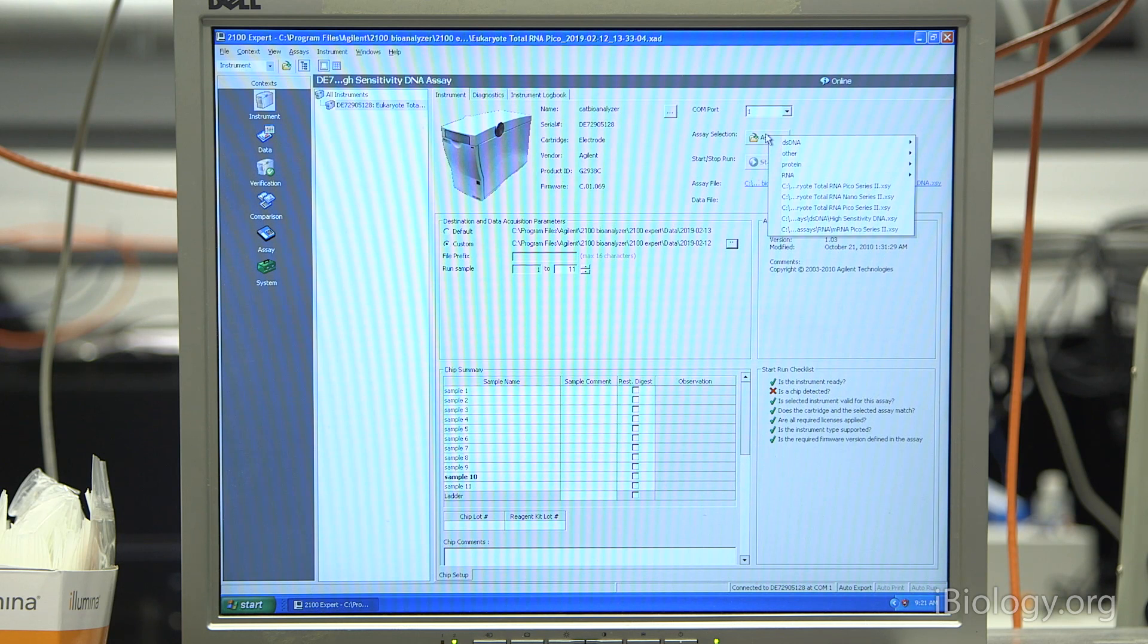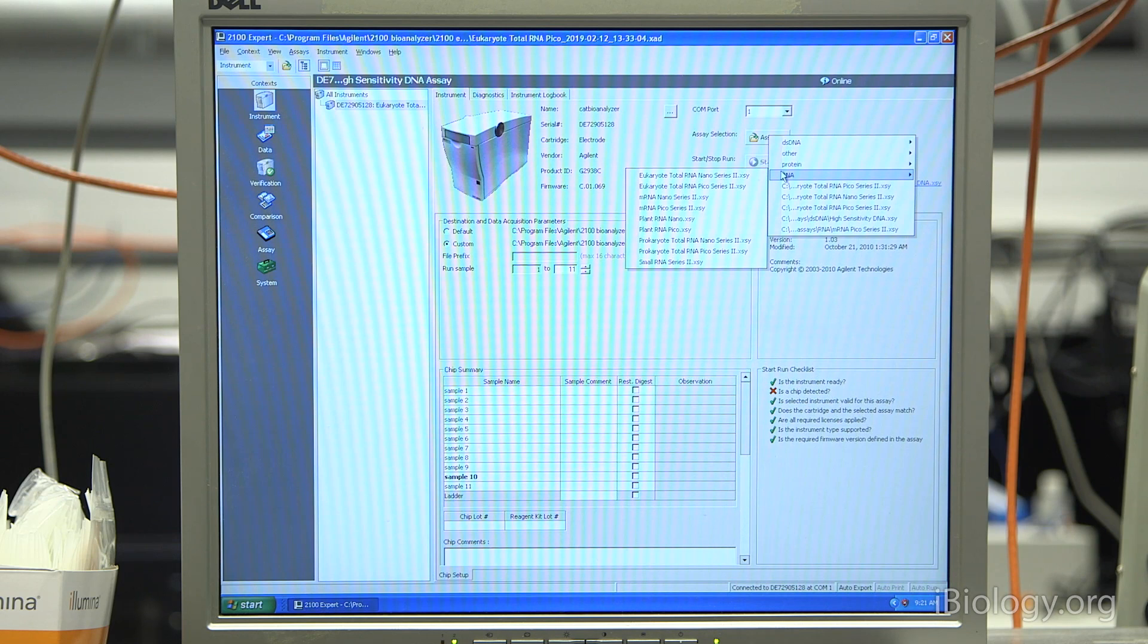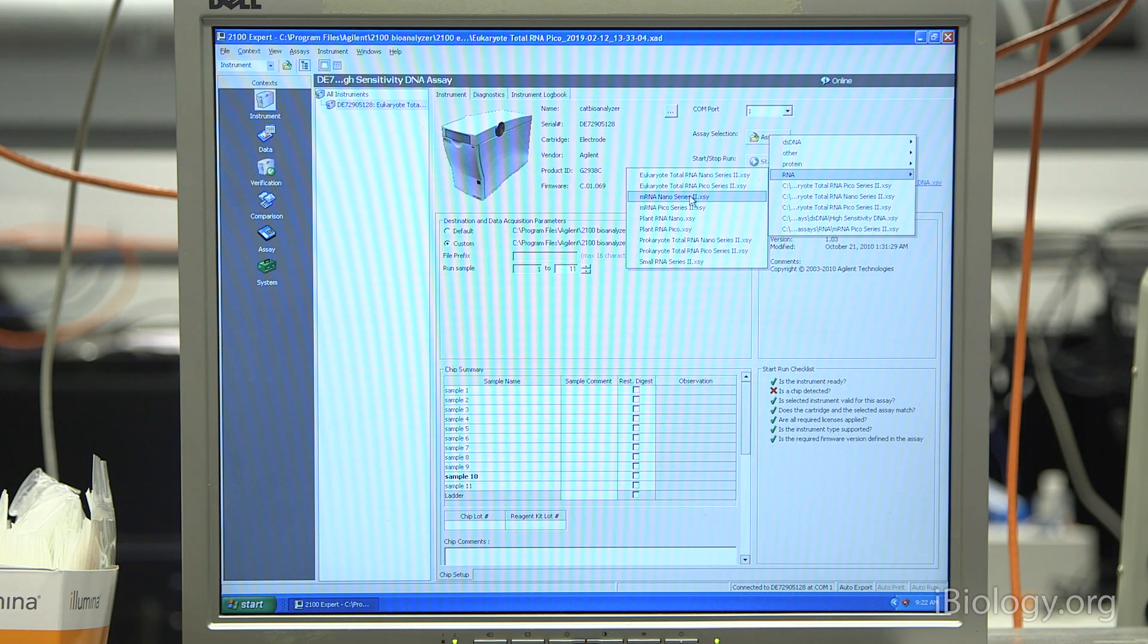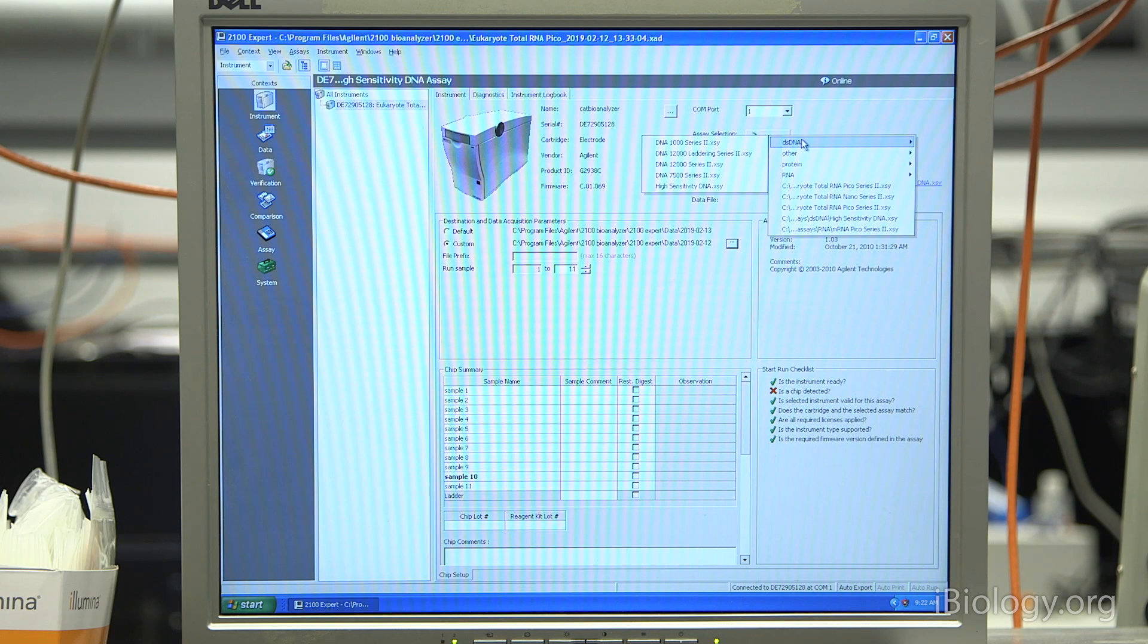The Bioanalyzer can analyze both DNA and RNA. If you're selecting DNA, you want to select the proper chip. Today, we're running the high-sensitivity chip. For RNA, there are two different types of kits: nano and pico kits, as well as a small RNA kit. But what's important about the nano and pico kits, if you're analyzing RNA and want to get a RIN number—this is an RNA integrity number—you have to make sure that you select the total RNA options. This will cause the software to calculate a RIN number. If you select the mRNA options, you won't get a RIN number for your RNA.